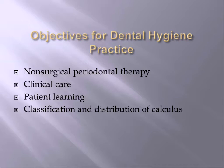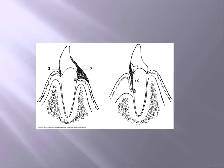For the classification and distribution of calculus, dental calculus is classified by its location on the tooth surface as related to the adjacent free gingival margin — that is, is it supragingival or subgingival calculus? Supragingival calculus is usually on the cervical third of the mandibular anteriors and can extend slightly subgingival.